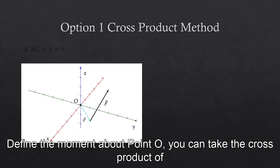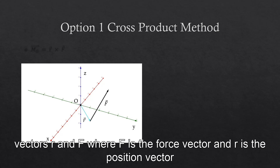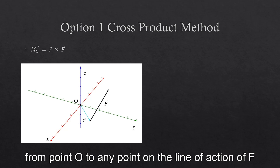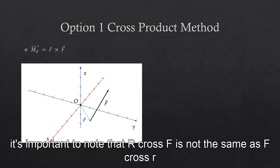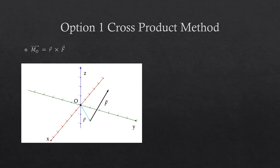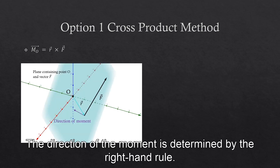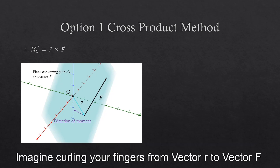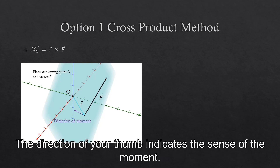To find the moment about point O, you can take the cross product of vectors r and F, where F is the force vector and r is the position vector from point O to any point on the line of action of F. It's important to note that r cross F is not the same as F cross r. The direction of the moment is determined by the right-hand rule. Imagine curling your fingers from vector r to vector F; the direction of your thumb indicates the sense of the moment.